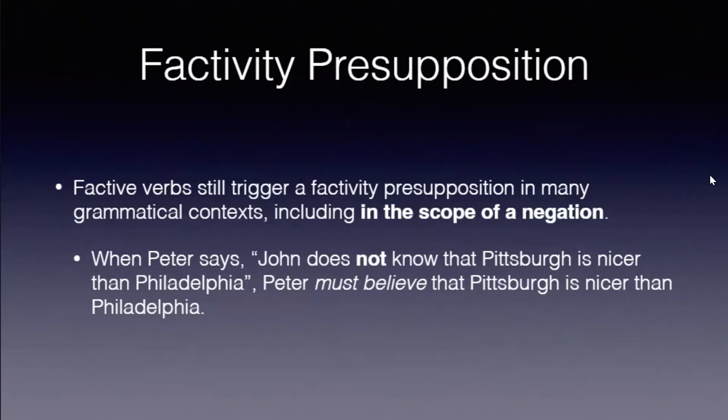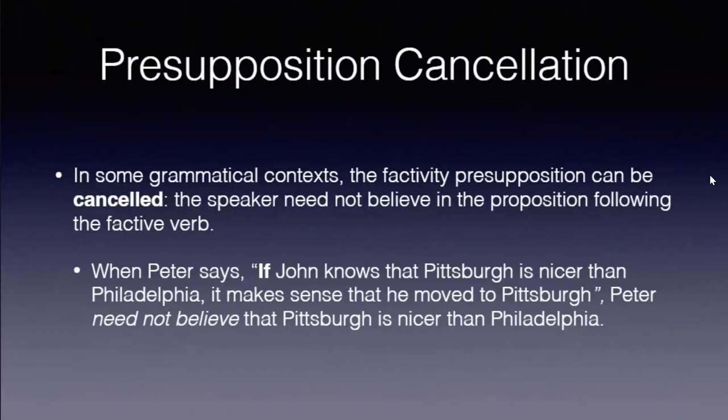However, in some contexts presuppositions can be cancelled. It's not cancelled when the factive verb is under negation, but there are syntactic contexts in English where the factivity presupposition can be cancelled — under an epistemic modal, for example, 'perhaps' or 'might.' That might cancel the factivity presupposition. When 'knowing' is embedded under a conditional, that might also cancel the factivity presupposition, so there is a lot of work in formal semantics on this question.